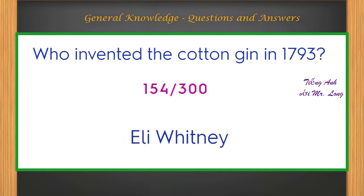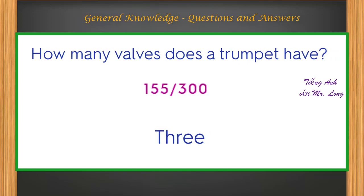Who invented the cotton gin in 1793? Eli Whitney. How many valves does a trumpet have? Three.